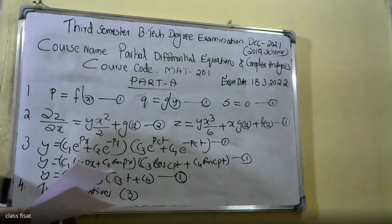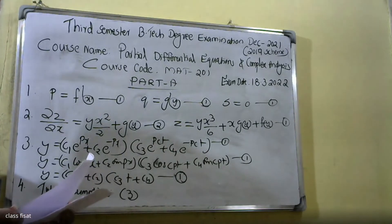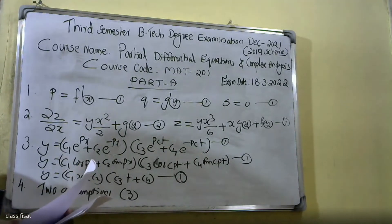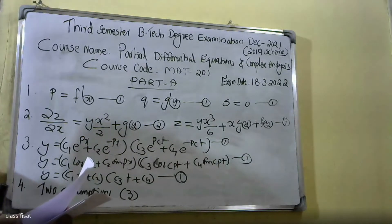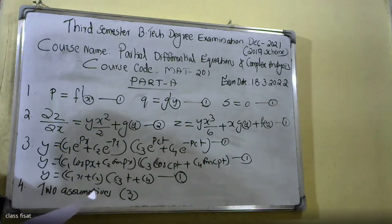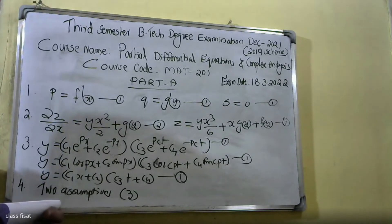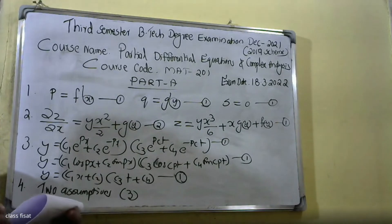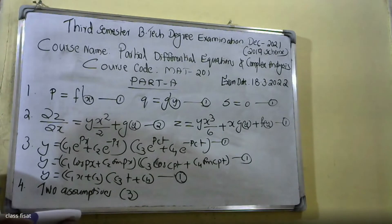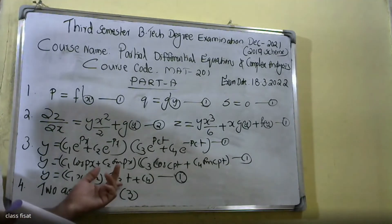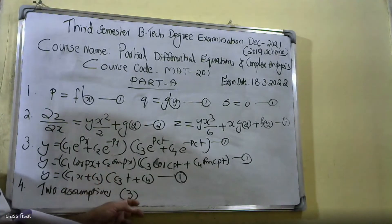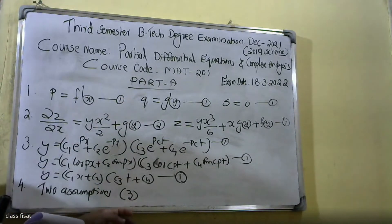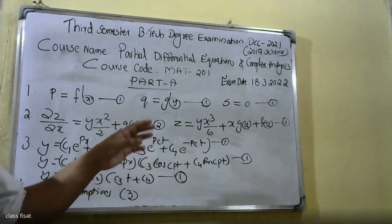Write any two assumptions used in the derivation of the one-dimensional heat equation. The first assumption: heat flows from a higher temperature to a lower temperature. The second assumption relates to one-dimensional temperature modes in the derivation.